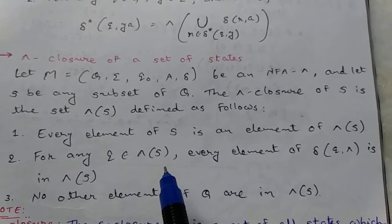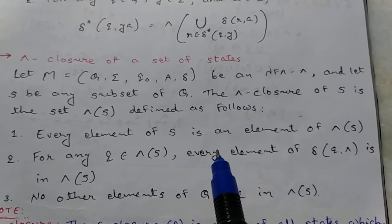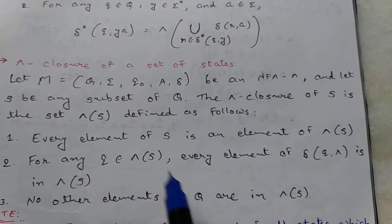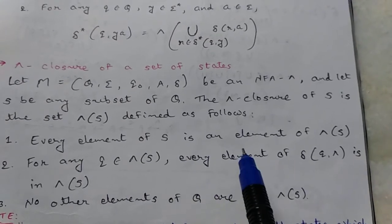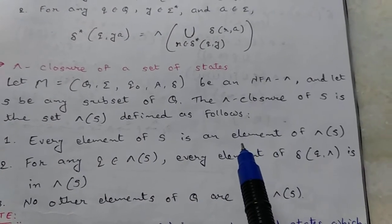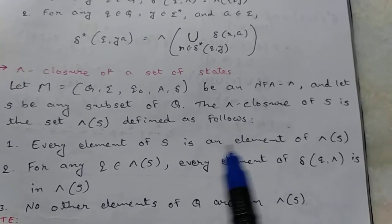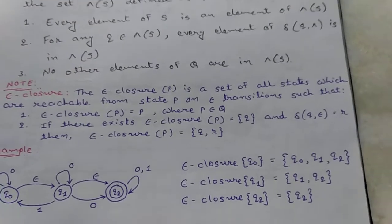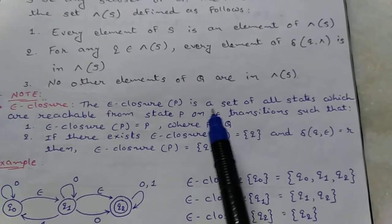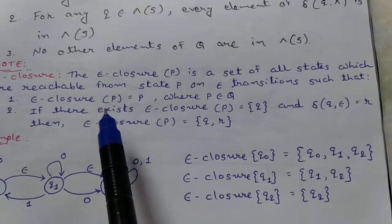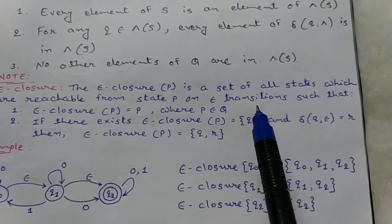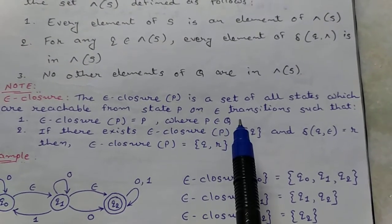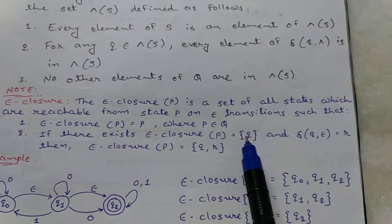In short, to find the epsilon closure of any set, first put the set itself in the closure, then find from this set which states you can transfer to using epsilon transitions. No other input symbols are used. The epsilon closure of p is the set of all states reachable from state p on epsilon transitions, such that epsilon closure of p equals p where p belongs to Q. If epsilon closure of p equals q, then delta of q to epsilon equals r implies epsilon closure of p equals q, r.